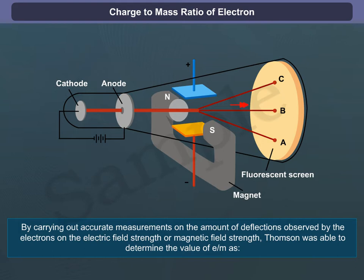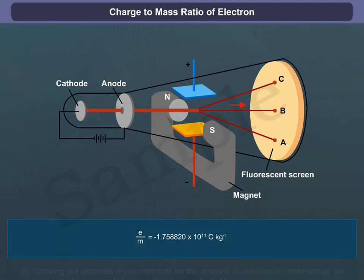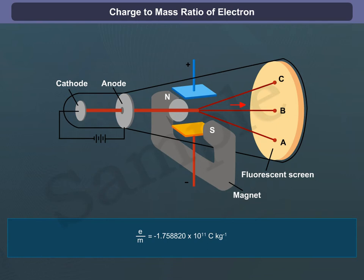By carrying out accurate measurements on the amount of deflections observed by the electrons on the electric field strength or magnetic field strength, Thomson was able to determine the value of E/Me as -1.758820 × 10^11 coulombs per kilogram.